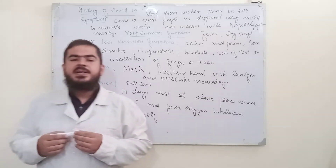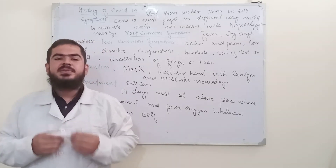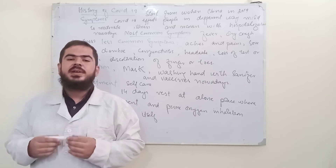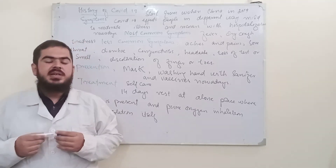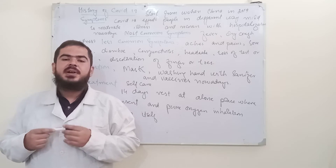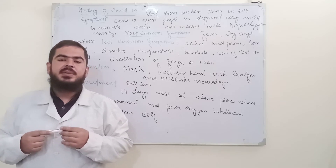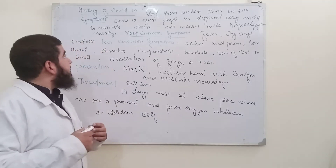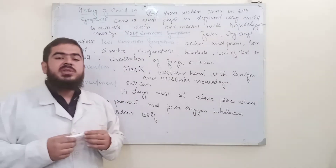The history of COVID-19 is like this: it first came from Wuhan, China in 2019. So the year was 2019 and the place was the city of Wuhan, China.